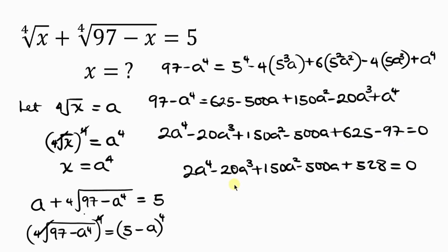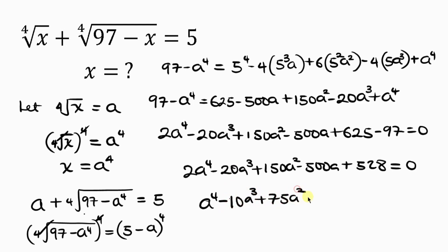Notice that 2 divides through the entire equation. Dividing by 2 gives: a⁴ minus 10a³ plus 75a² minus 250a plus 264 equal to 0.